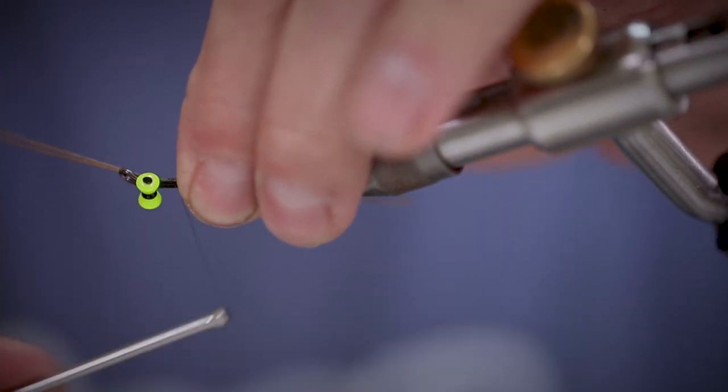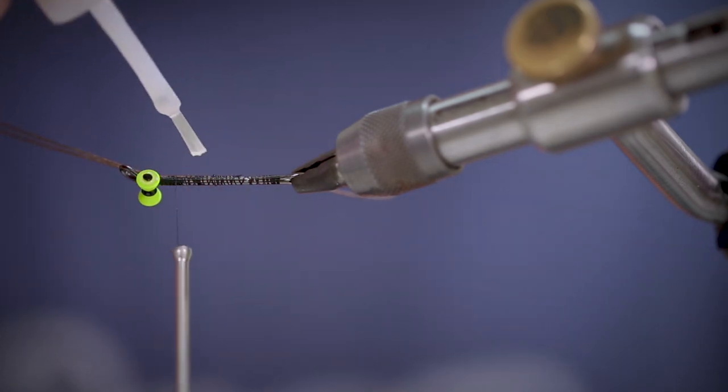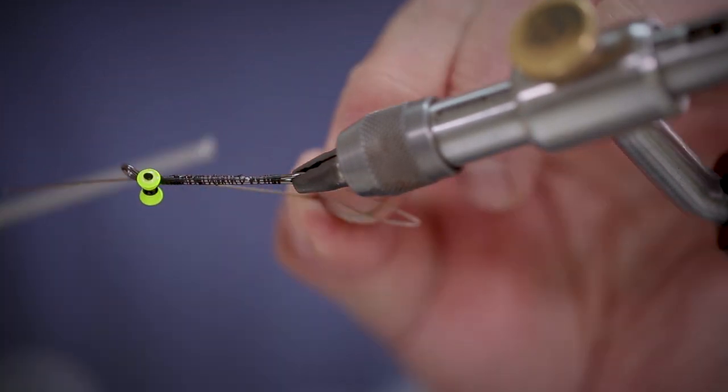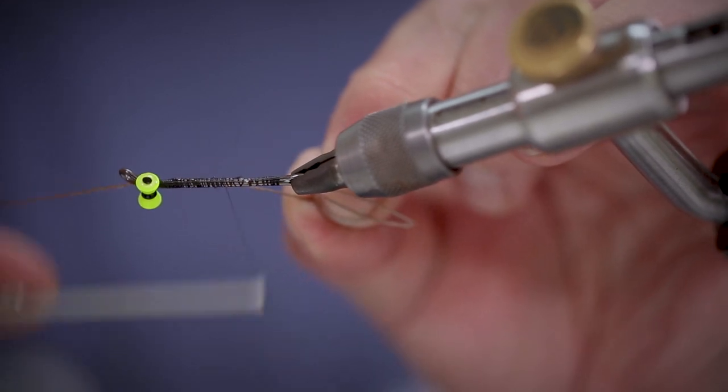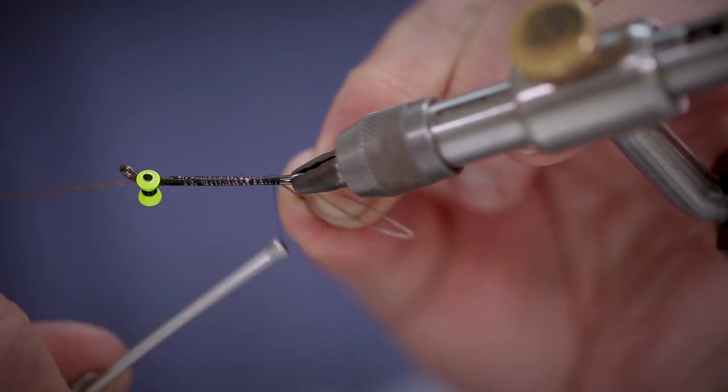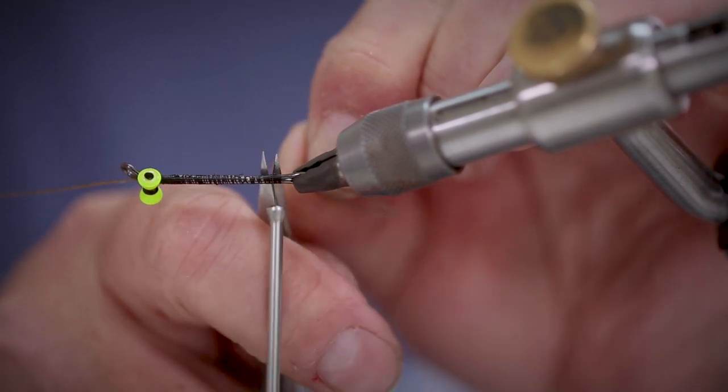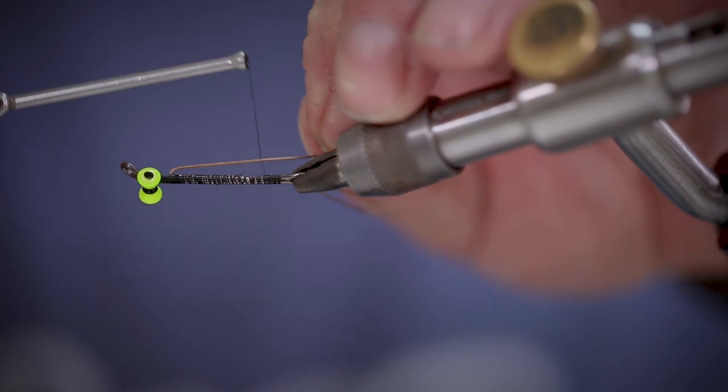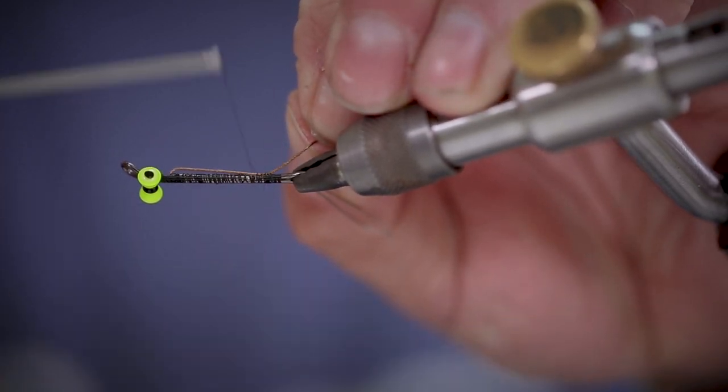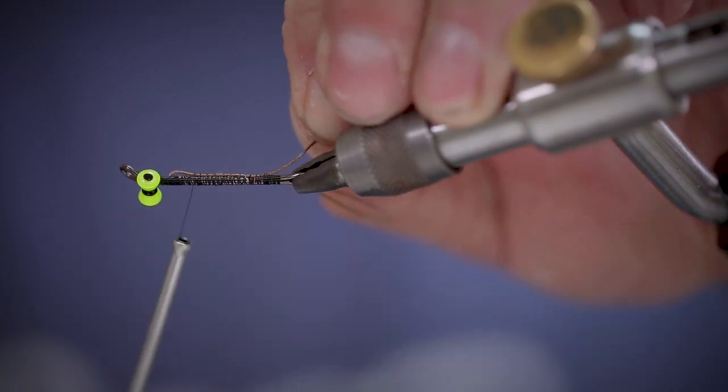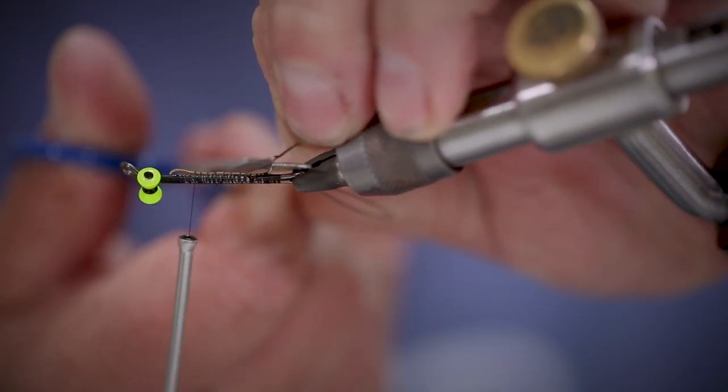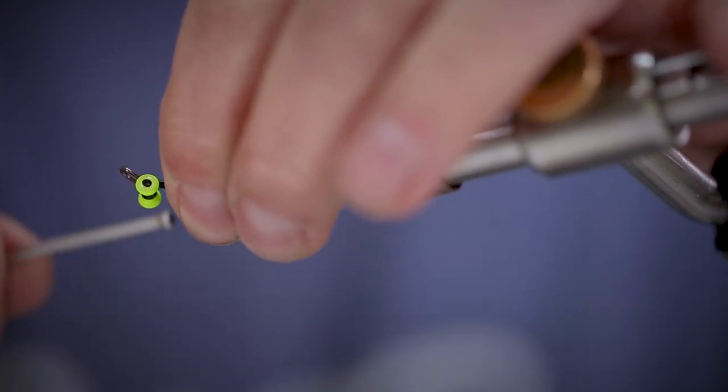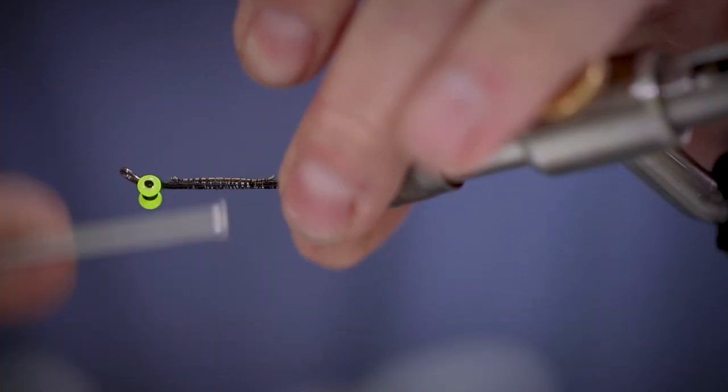When you're happy with the length, we're going to add a little bit of superglue and then lock everything into place, doubling back the wire just to keep everything nice and secure. Just take your time to make sure that everything is nice and smooth on the body.